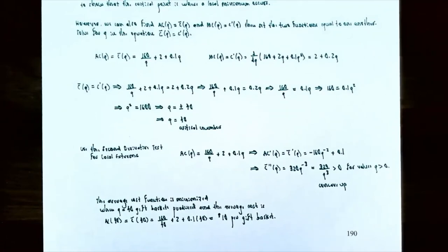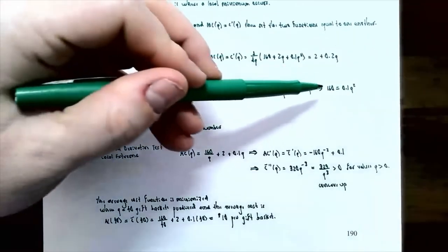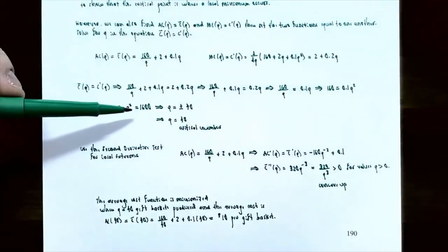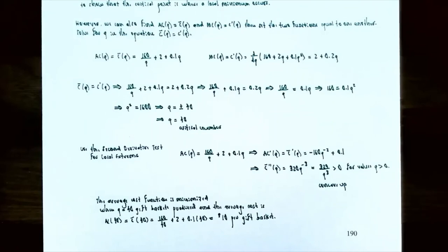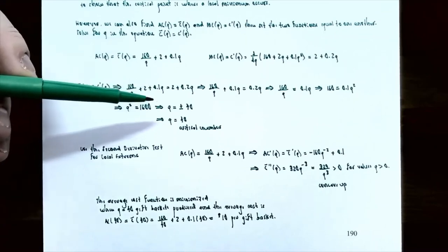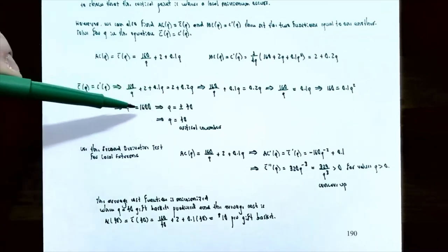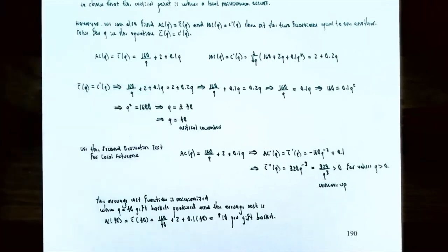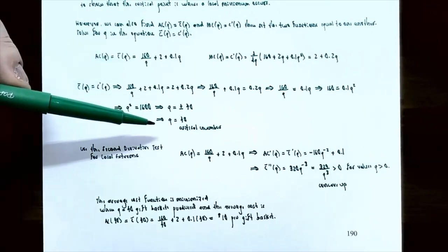Dividing both sides by 0.1: q² = 1,600. Taking the square root: q = ±40. Since q represents the number of gift baskets, q cannot be negative. So q = 40 is the only critical number.